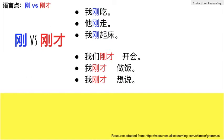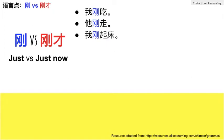From these six sentences, we can tell that 刚 means 'just' and 刚才 means 'just now' in English, and they are very different in speech parts. For the first three sentences, 刚 is used as an adverb to emphasize the action have just happened — 我刚吃, 他刚走, 我刚起床 — emphasizing the actions of 吃, 走, and 起床, which had just happened a short time ago.